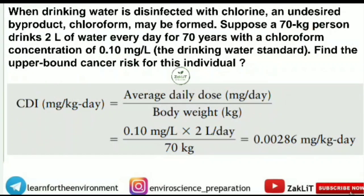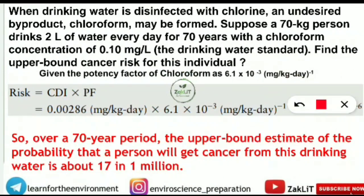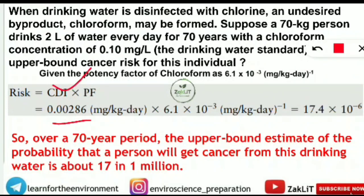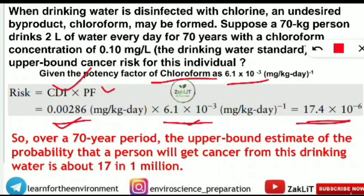Now everything comes together. The CDI we found is 0.00286 mg/kg·day. The potency factor for chloroform via oral route is already given as 6.1 × 10⁻³ mg/kg·day inverse — this is a standard value for oral consumption. If it were inhaled, the value would be different. Multiplying CDI by the potency factor gives 17.4 × 10⁻⁶.